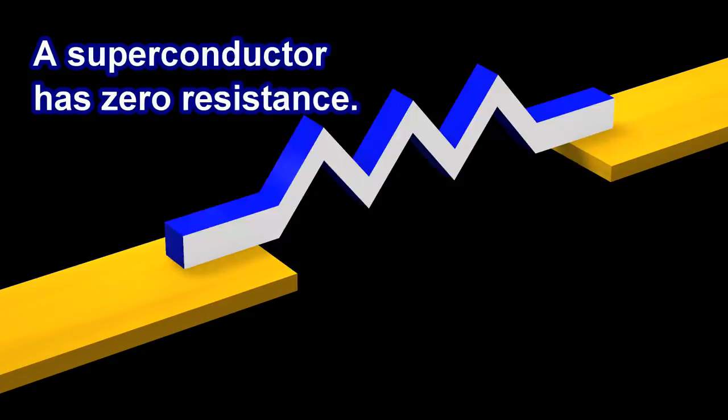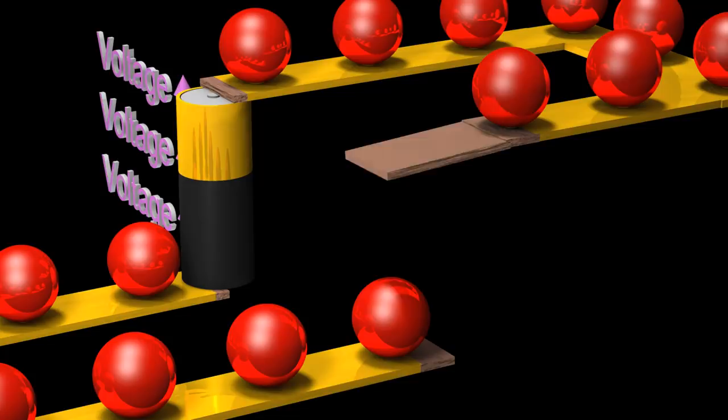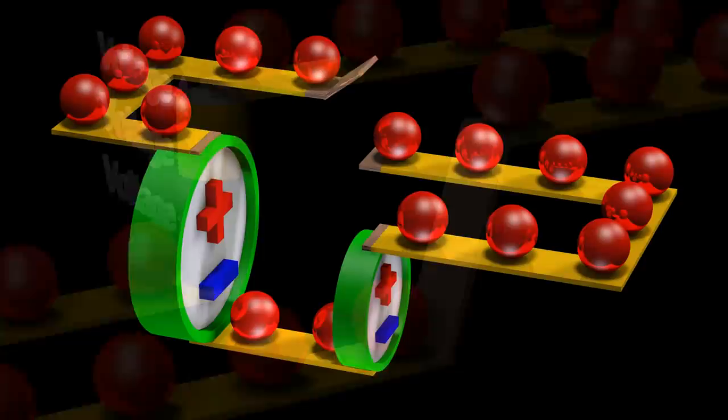Therefore, if we short out the two terminals of a voltage source with a superconductor, or if we use a superconductor to connect two voltage sources with different voltage values, we are back to our paradox.